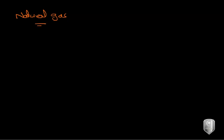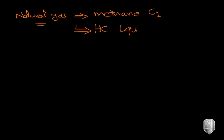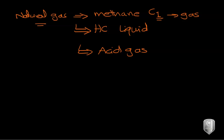At the beginning, we know that natural gas is our feed, and this gas is mainly consisting of methane — C1 or carbon one. But most of the time during production, natural gas contains other impurities such as hydrocarbon liquids. So instead of being in the gas phase like methane, we will also have hydrocarbon liquids. We can also have acid gases — gases that when dissolved in water have an acidic effect, which means they will lower the pH.